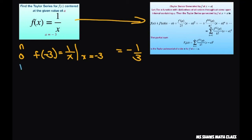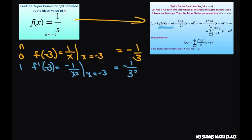Let's do the first derivative. So this would be this term here — that's at negative 3. When you differentiate, you get negative 1 divided by x squared. Evaluate that at x equals negative 3, and this is going to equal negative 1 divided by 3 squared.